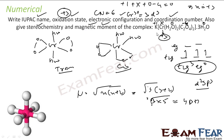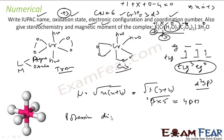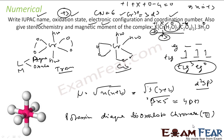Now the IUPAC name. Cation comes first: potassium. Then the anion, which is the complex. Ligands are written before the metal. The ligands are water (aqua) and oxalate. Alphabetically, aqua comes first — there are two, so we write 'diaqua'. Then two oxalate ligands; since oxalate is a chelating bidentate ligand, we use 'bis' instead of 'di', giving 'bis(oxalato)'. Then the metal: since the complex ion is negative, it is 'chromate(III)'. The compound also has three water molecules outside the coordination sphere. Full name: potassium diaquabis(oxalato)chromate(III) trihydrate.